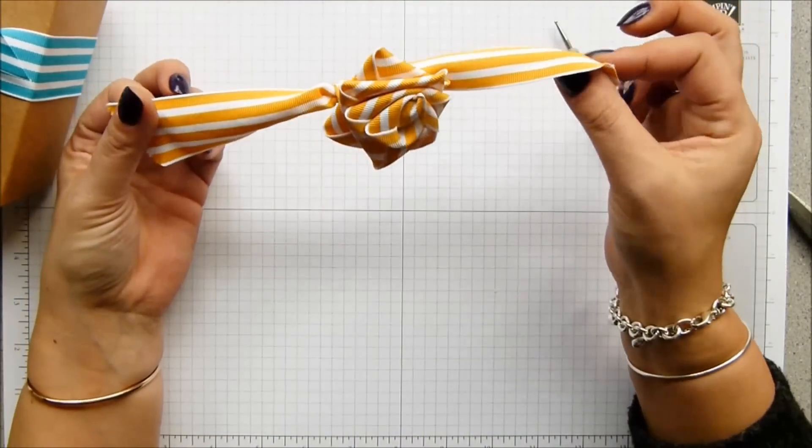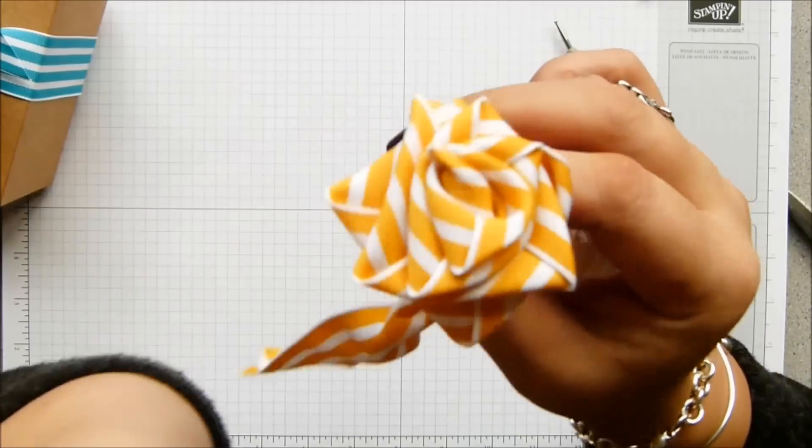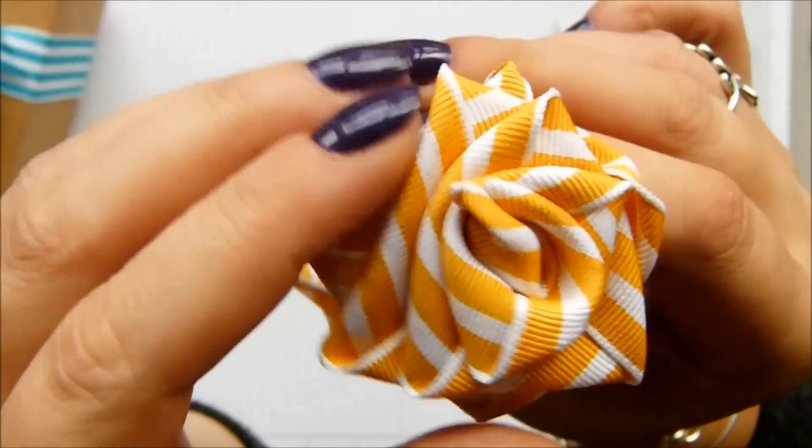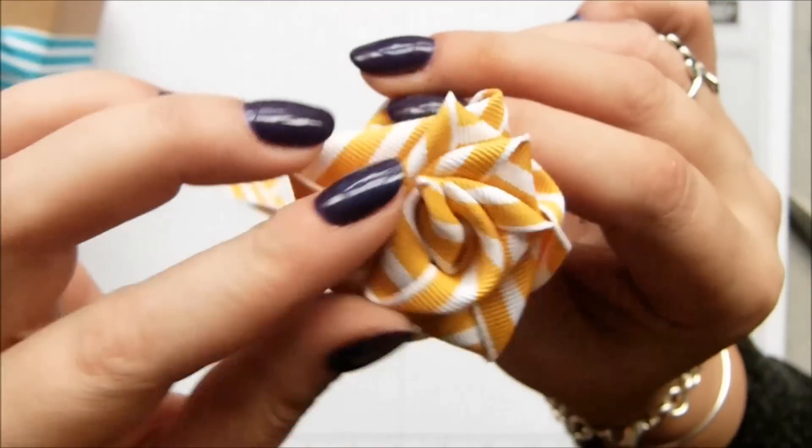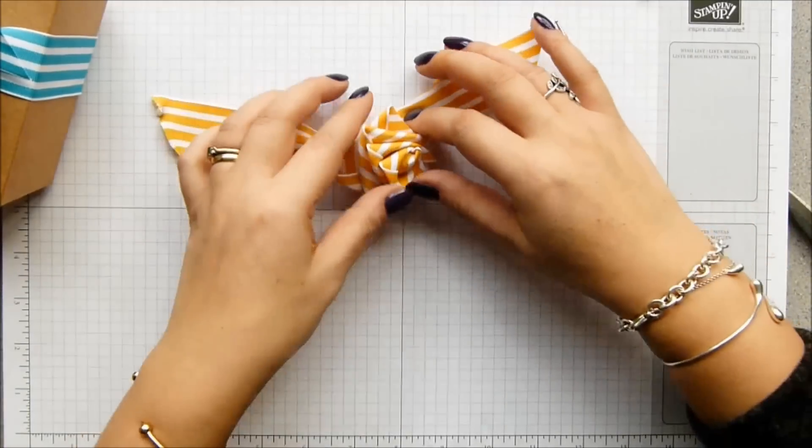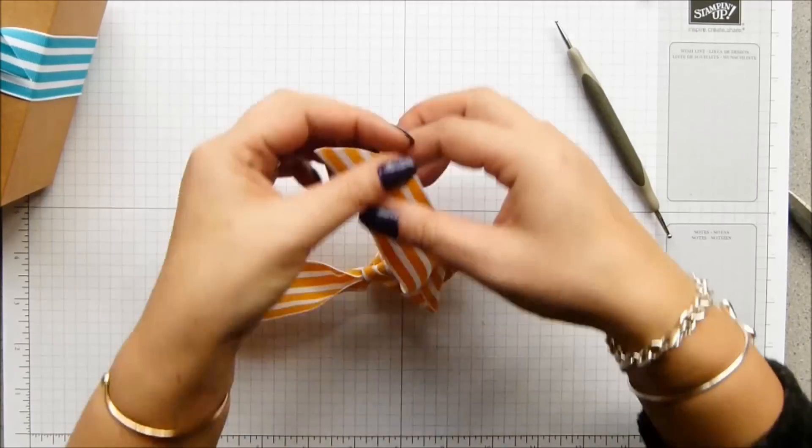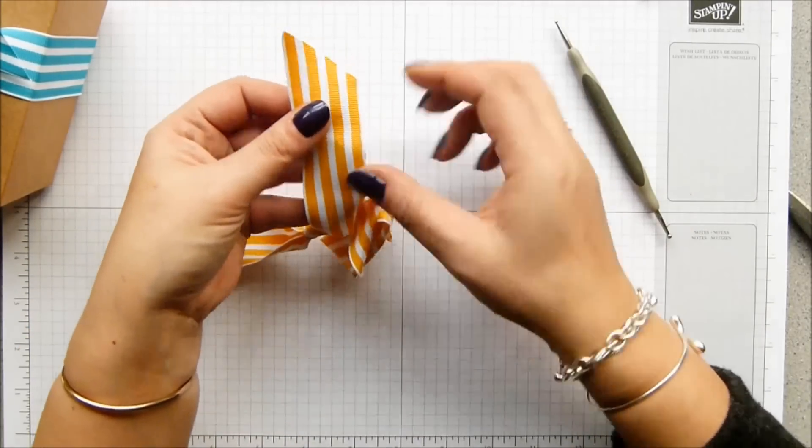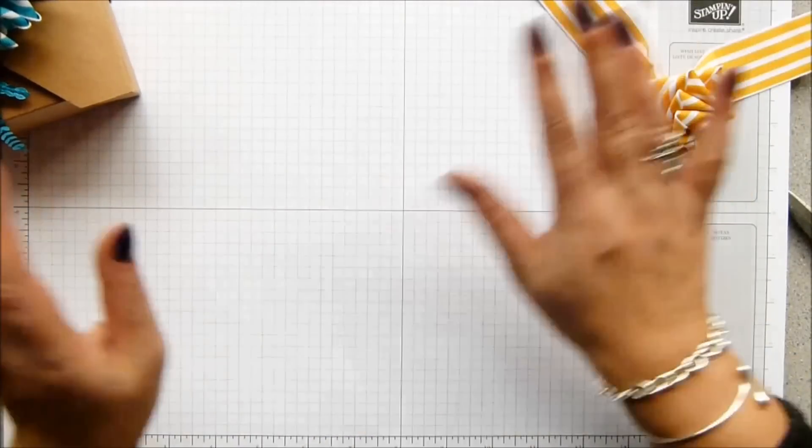And that is my rose. Isn't that pretty? It's just a spiral. Obviously this is stripy but you could do it with plain ribbon. You could do it—it works very well with the florist's ribbon, the stuff that you can split down the length.